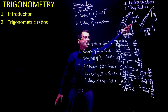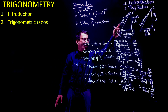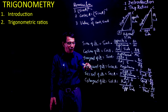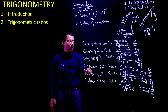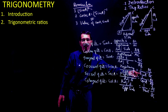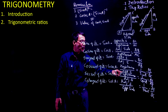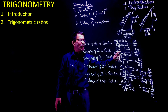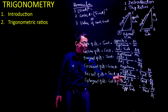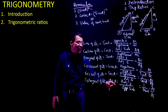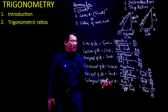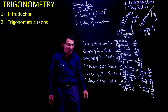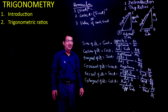So to summarize: sin is opposite divided by hypotenuse; cos is adjacent divided by hypotenuse; tan is opposite upon adjacent. The further trigonometric ratios are easy to remember because cosec A is 1 upon sin A — so you inverse it — giving hypotenuse upon opposite side. Sec A is 1 upon cos A — inverse of cos — giving hypotenuse upon adjacent side. And cot A is 1 upon tan A — inverse of tan — giving adjacent upon opposite. These are the six trigonometric ratios.